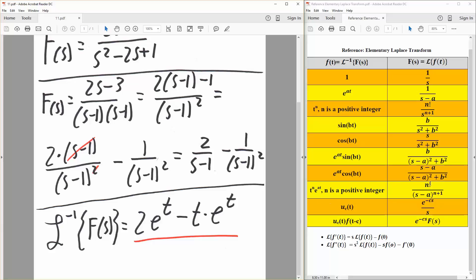So n factorial divided by s minus a raised to n plus 1. In our case, n would be 1, and we have 2. So 1 plus 1 is 2. We would say t raised to n. We said n was 1. So t times e raised to a t.